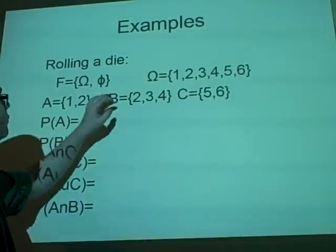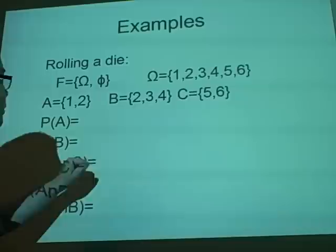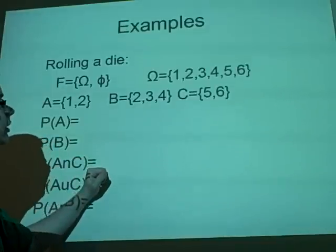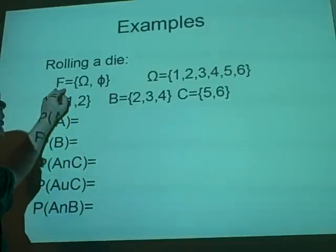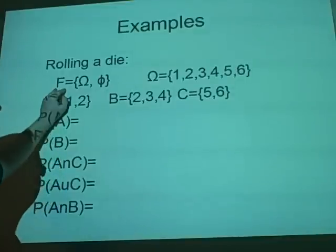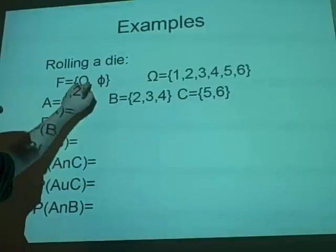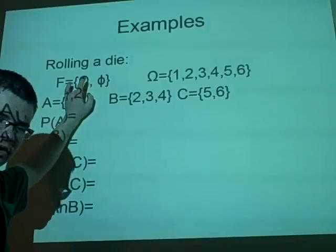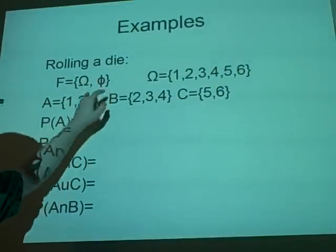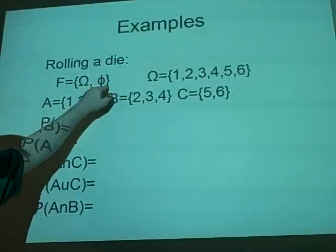Right. Here's an example. We have rolling a dice. Now, our F is omega and the empty set. This is all the parts of it. We have omega and we have the empty set, because we've got to have the opposite to everything that we have in there. So, this is everything, this is nothing.